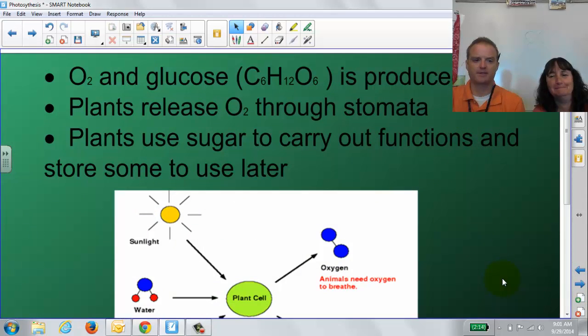All right, guys. So then, what happens next? From that process, that chemical process, O2 and glucose are produced. And glucose, that's a big molecule there, but that's what it is. It's C6H12O6, so 6 carbon, 12 hydrogen, and 6 oxygen atoms. That's one kind of basic sugar molecule. The stuff you guys like, like the fructose and the sucrose, there's going to be some version of this. There may be a few more hydrogens or oxygens, but it looks a lot like this molecule here. And then plants release the O2 through the stomata. Actually, the plant doesn't really need it. It lets it go. It's like a waste product. It just gets rid of it. And then plants use the sugars to carry out their functions they need to carry on life, or some can be stored for later.